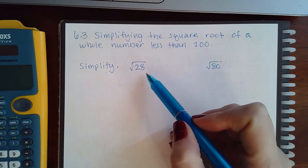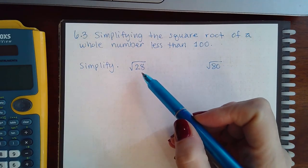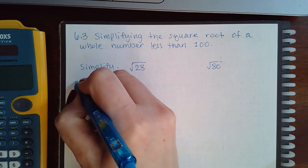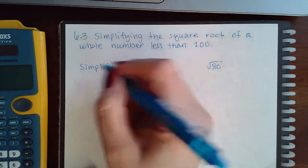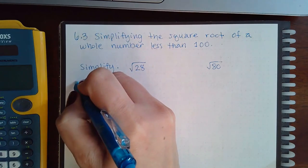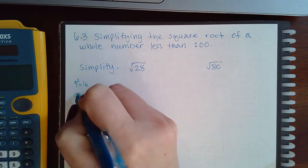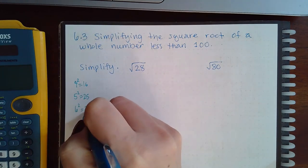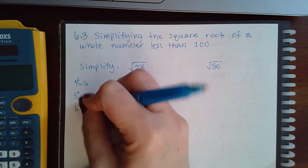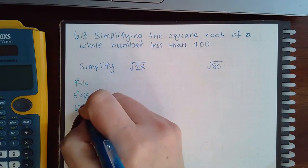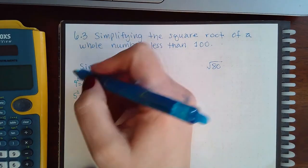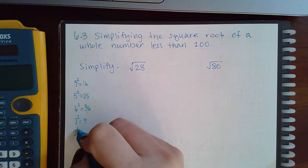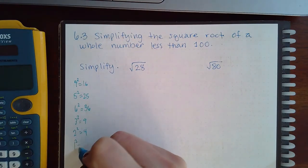The square root of 28 is not a perfect square. There doesn't exist a number squared that will equal 28. But I do know that 4 squared is 16, 5 squared is 25, and 6 squared is 36. You also have 3 squared is 9, 2 squared is 4, and 1 squared is 1.